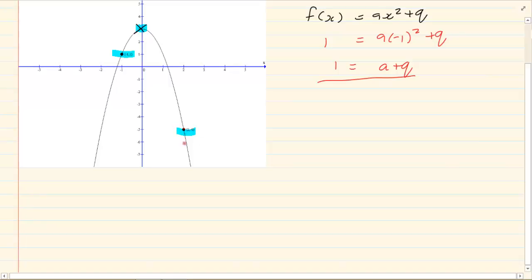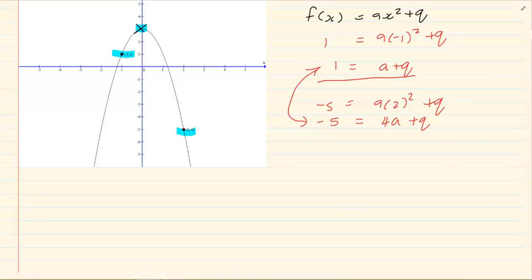Then we substitute our second point. Our second point is 2 and minus 5. So we have minus 5 is equal to a into 2 squared plus q, giving me 4a plus q is equal to minus 5. Now look at what we have. We have a simultaneous equation.